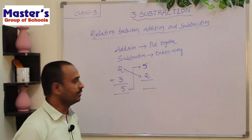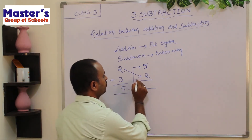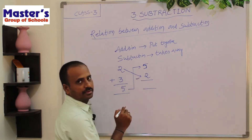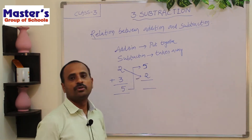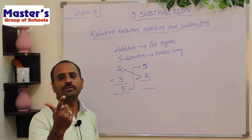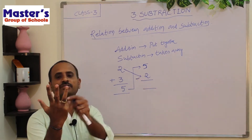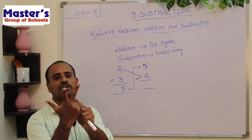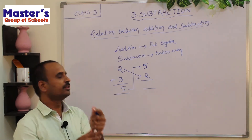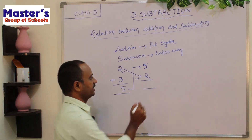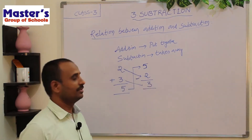Let us check whether we get 3. If we subtract 2 from 5: open 5 fingers, count 1, 2, 3, 4, 5. Close 2 fingers: 1, 2. There are remaining 3 fingers: 1, 2, 3. So write 3. You will get the second number.